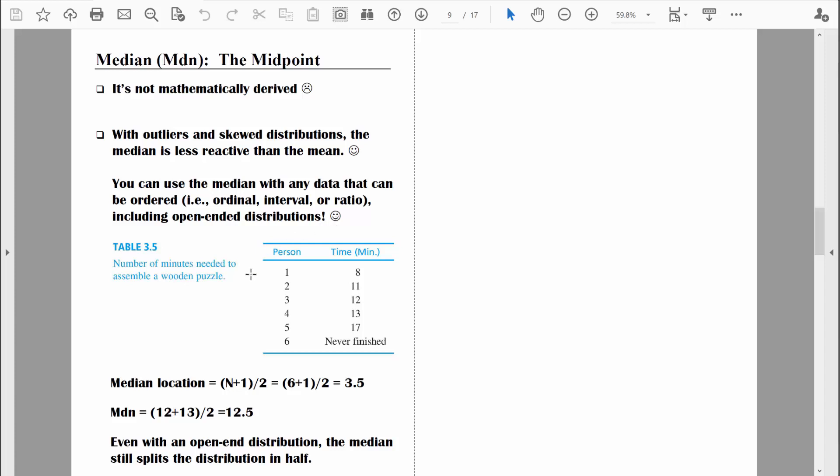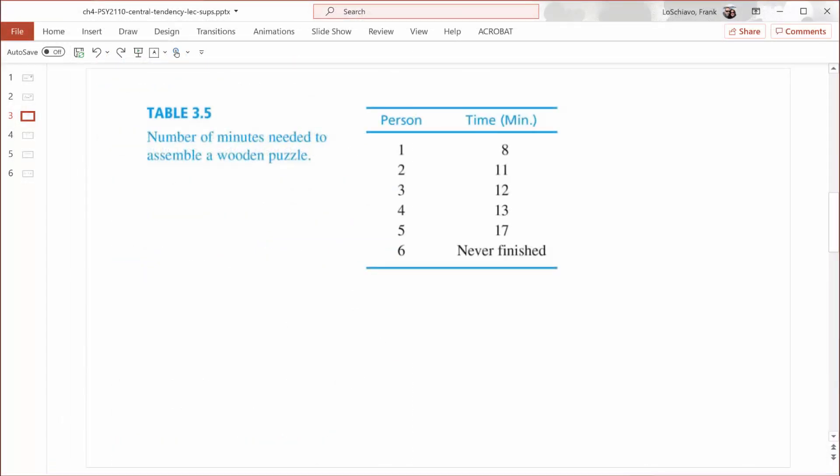When psychologists administer more sophisticated intelligence tests, people need to not only answer a variety of questions, they often need to perform various tasks. So one task might be to complete some type of a puzzle. And some people complete those puzzles very quickly. Some people never get it completed. And at some point, the person administering the test needs to say, okay, we've spent enough time on that. Let's move on. So in those situations, we're left with an open-ended distribution. There are some values in our dataset that are essentially undetermined. There'd be no way that you can compute a mean with that type of data. Just imagine if I'm trying to compute a simple average, a mean based on this list of data right here. Once I get to that value, never finished, I'm stuck dead in my tracks. However, we can compute the middle value. We can compute the median. Let me show you how.